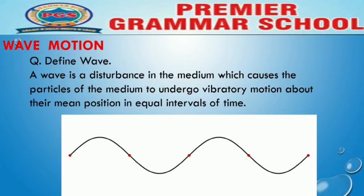The wave is a disturbance in the medium which makes the particles undergo vibratory motion. For vibratory motion, there are two conditions: the particles remain about their mean position, and they cover equal distances in equal intervals of time.